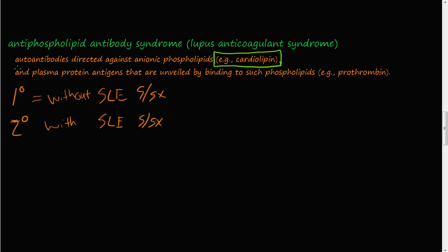You can have primary or secondary antiphospholipid antibody syndrome. Primary antiphospholipid antibody syndrome is when the patient does not have SLE signs and symptoms — SLE being another immune disease — but they do have thrombosis or a hypercoagulability state. If the patient also has SLE signs and symptoms along with this hypercoagulability or thrombosis, then they are considered to have secondary antiphospholipid antibody syndrome.